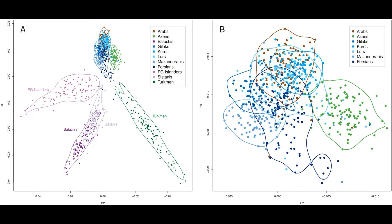I'm going to take a look at the PCAs now. These are the principal component analyses and these look at the genetic variation between the groups. As you can clearly see here, the four outlying groups are the Iranians inhabiting the Persian Gulf Islands, the Baluchis and Sistanis, and the Turkmen. These are the most distinct groups from the remaining Iranian populations.